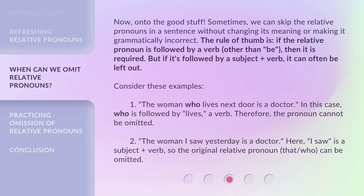Consider these examples. First: 'The woman who lives next door is a doctor.' In this case, 'who' is followed by 'lives,' a verb. Therefore, the pronoun cannot be omitted. Second: 'The woman I saw yesterday is a doctor.' Here, 'I saw' is a subject plus verb, so the original relative pronoun — 'that' or 'who' — can be omitted.